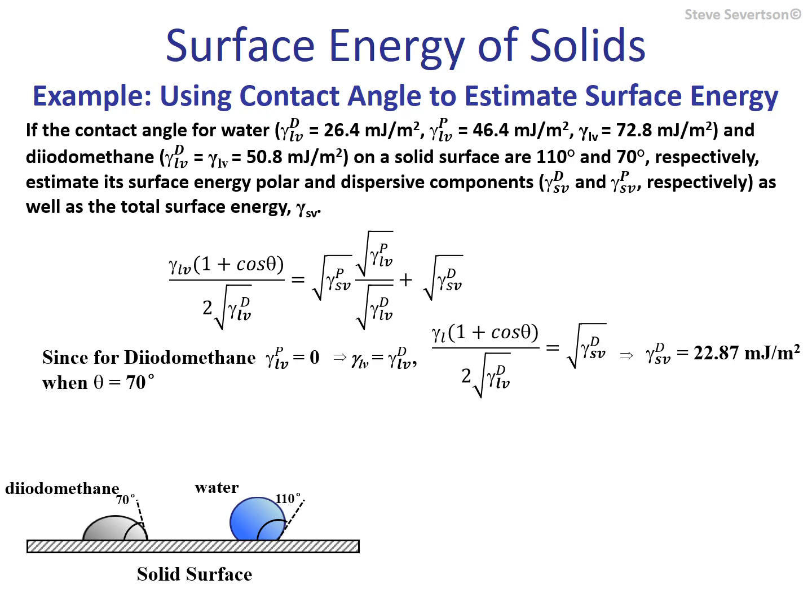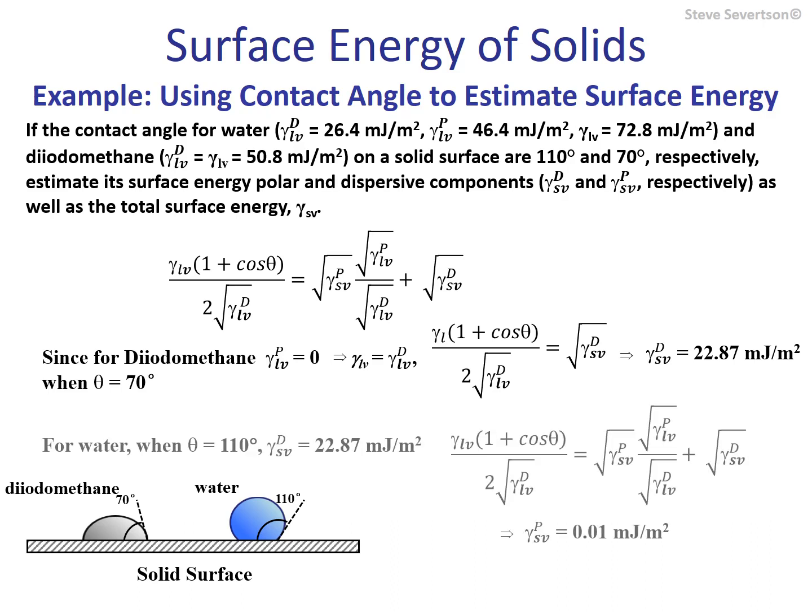Now we use the organic probe liquid that has both a polar component and a dispersive component — water — which had a contact angle of 110 degrees. In our equation, we plug in the dispersive component for the surface energy just determined. With this contact angle measurement, we have everything else we need: the contact angle, the surface tension of water, its dispersive component, and its polar component. The only unknown is the polar component of the surface energy for the polymeric material, and we solve for that.